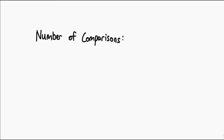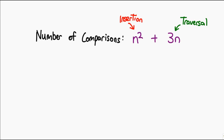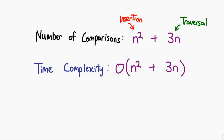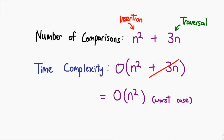The actual number of comparisons is N² + 3N — the 3N coming from the in-order traversal — but when we write things in Big O notation, we only keep the item that grows the fastest. Hence, the final worst case time complexity for Tree Sort is O(N²).